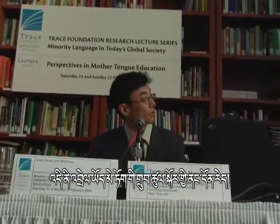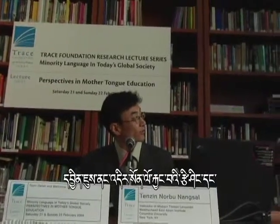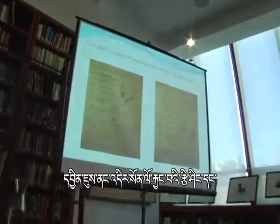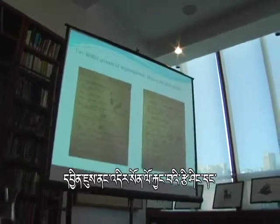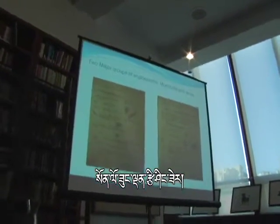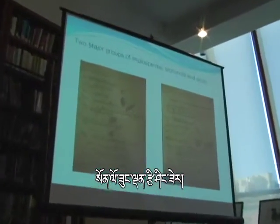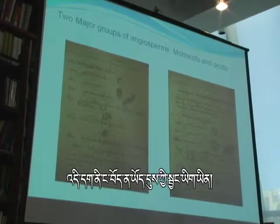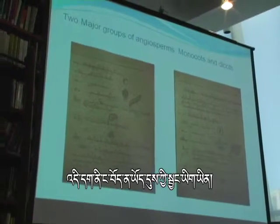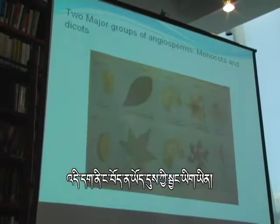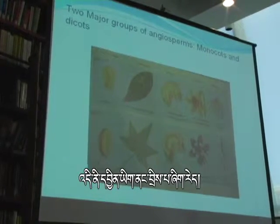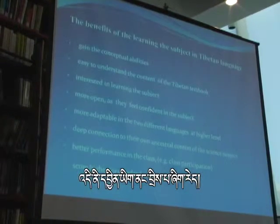Maybe I will show this in English — it's about the structure of the flower. This is also about the monocots and the dicots in Tibetan. These are my notes, and this is the English version. So basically we have those terminologies.